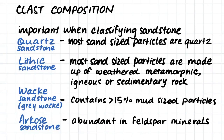Now that we have looked at the grain sizes, we will then be interested in the composition of the grains. Clast composition is most important when we are classifying sandstones. There are four main types of sandstones classified according to their clast composition. First we have quartz sandstone, in which most of the sand sized particles are quartz. Lithic sandstone is when most of the particles are made up of any type of weathered rock — metamorphic, igneous, or sedimentary. Wacky sandstone, sometimes called greywacke, must contain more than 15% mud sized particles. An arkose sandstone is a sandstone where a lot of the grains are made up of feldspar minerals.